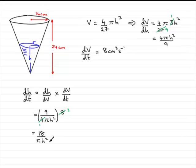So that's the general rate of change of the height with respect to time in terms of the height h. What we need to do now is just say, what's this going to be when h is 12?